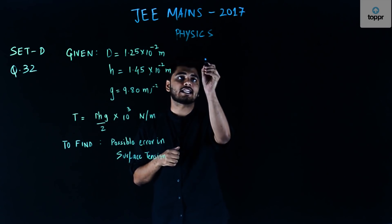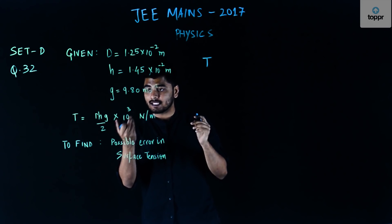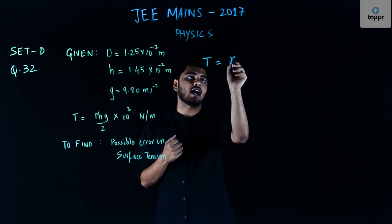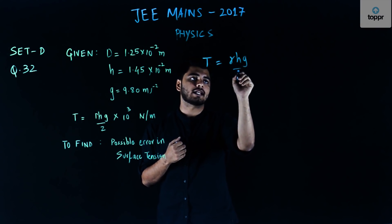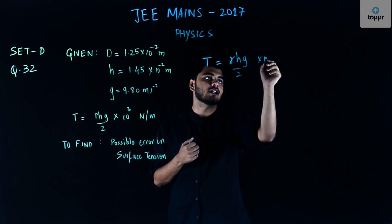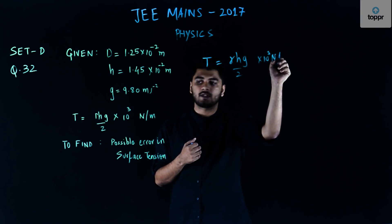So I know that my surface tension value as given by the formula can be calculated by RHG by 2 into 10 to power 3 Newton per meter.